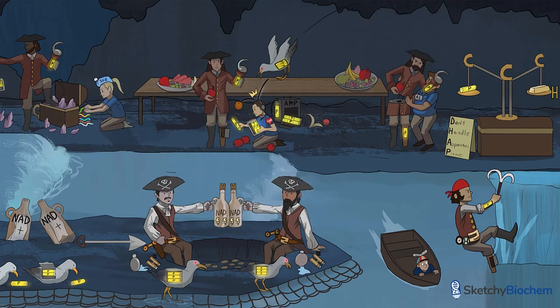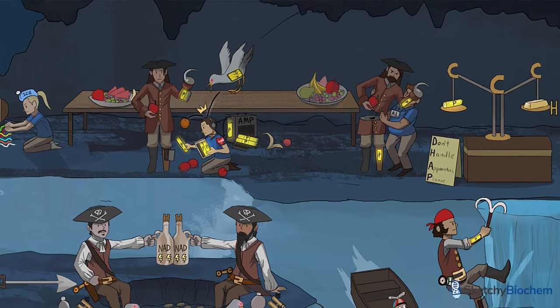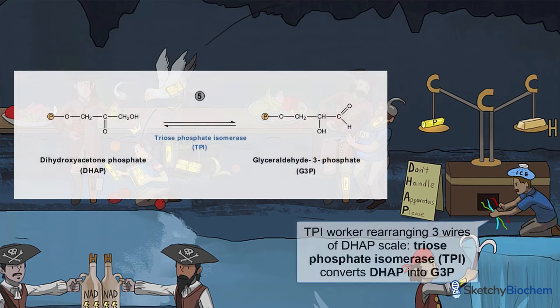While G3P is all ready to move on to the payoff phase, DHAP needs a little extra love and attention. Triose phosphate isomerase, or TPI, comes to the rescue. TPI isomerizes DHAP into G3P, just like this cast member rearranging some wires in our DHAP treasure scale.